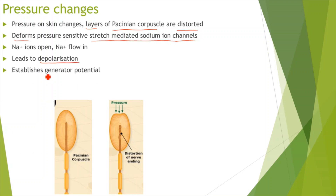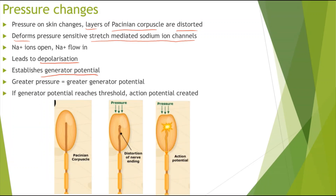This establishes a generator potential — again, a change in the charge of the membrane. The greater the pressure, the greater the generator potential will be. If the generator potential reaches a threshold, then an action potential will be created, as shown in the diagram, because there has been a large distortion in the shape of the Pacinian corpuscle, causing a large depolarization, which leads to an action potential being formed.